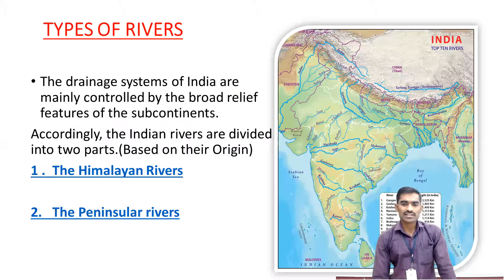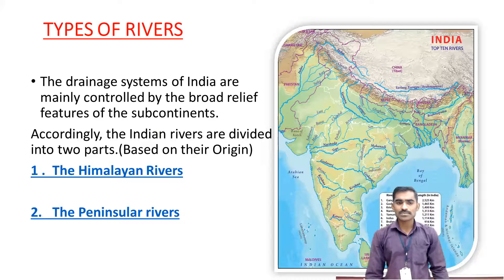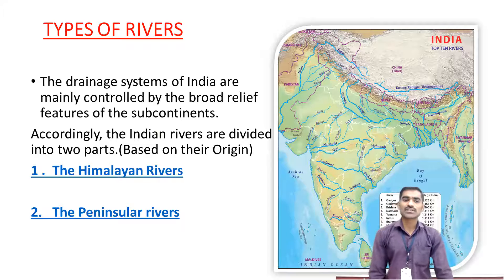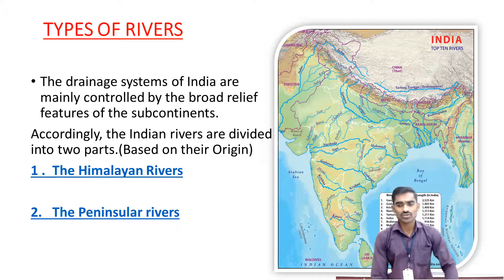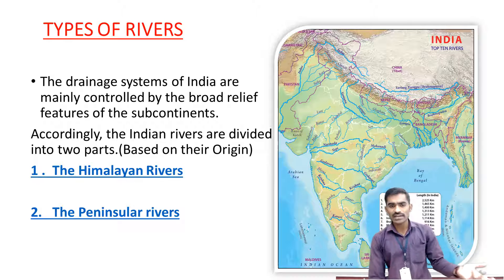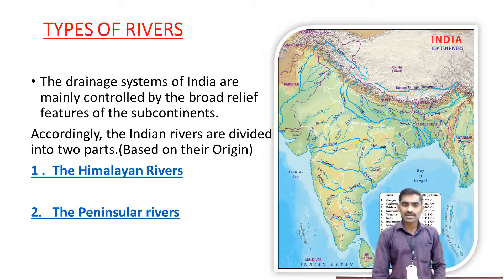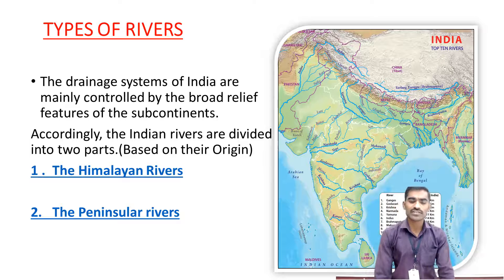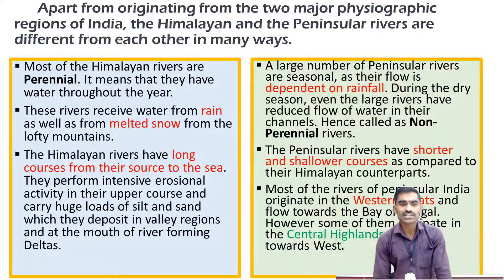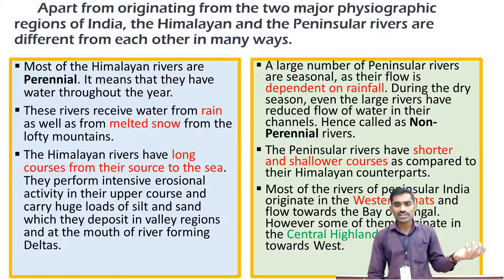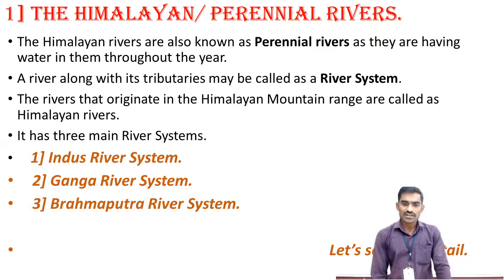Before that, let's revise quickly what we have learned. We have learned the types of rivers — the rivers of India are divided into two major types: Himalayan rivers and peninsular rivers. After that, we have also seen the difference between non-perennial rivers and perennial rivers.